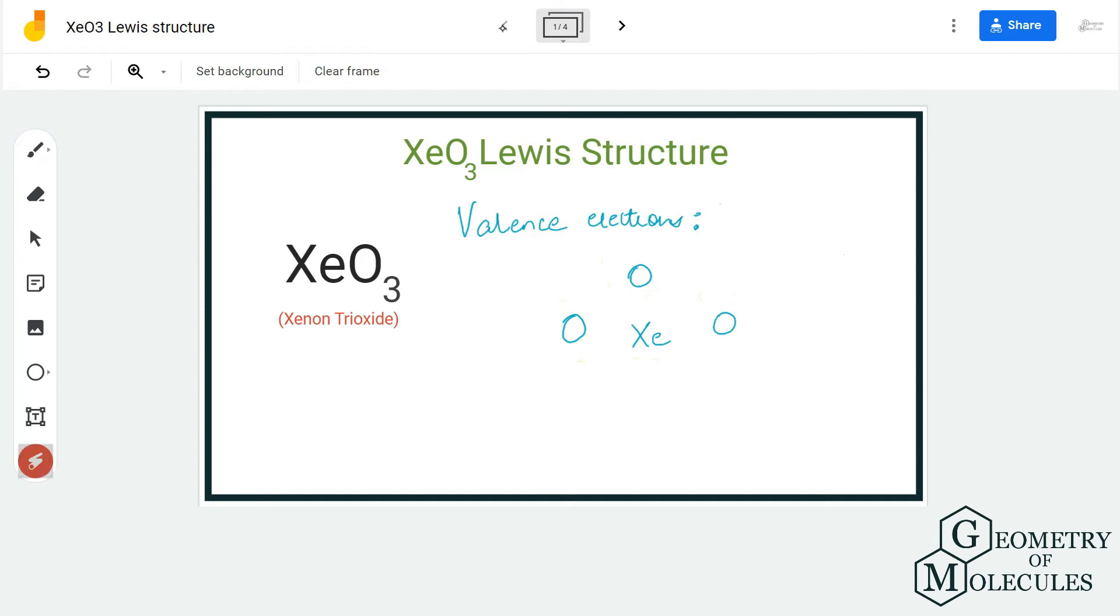Hi guys, welcome back to our channel. In today's video, we are going to determine the Lewis structure for XeO3, xenon trioxide. To determine its structure, we are first going to look at the total number of valence electrons followed by the arrangement of atoms in this molecule.